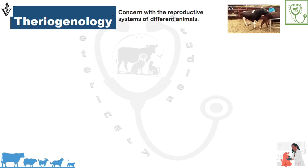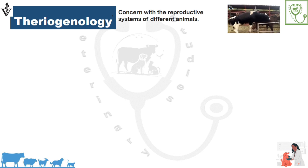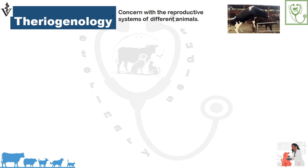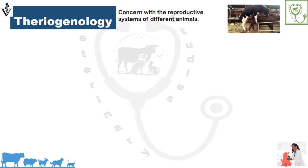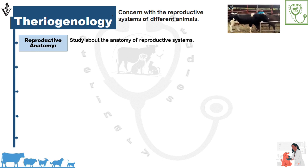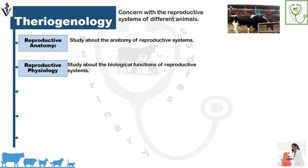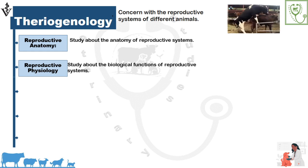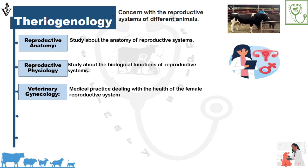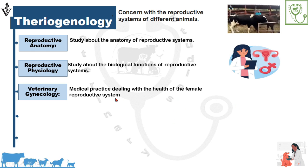Periogenology is the study of the reproductive systems of animals, including the anatomy, physiology, pathology, and clinical practices used in animal reproduction. It includes reproductive anatomy — the study of the anatomy of reproductive systems — and reproductive physiology — the study of the biological functions of reproductive systems. Veterinary gynecology is the clinical study of medical processes concerned with the health of the female reproductive system.